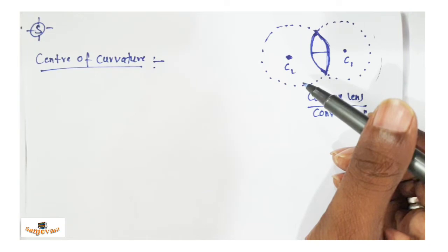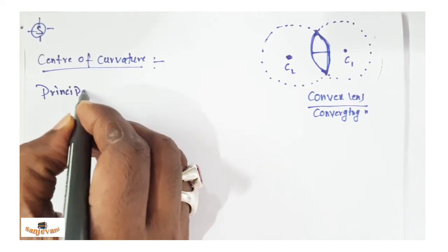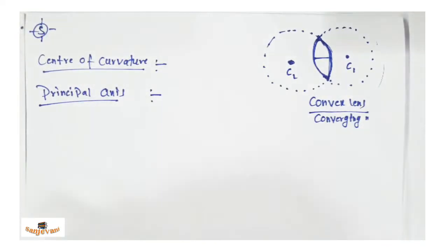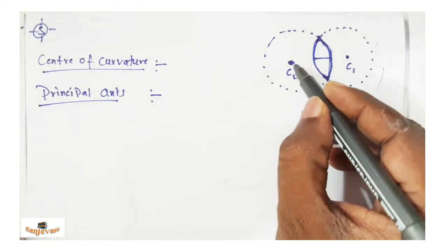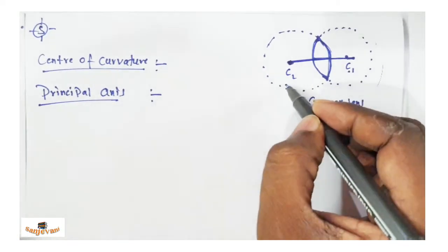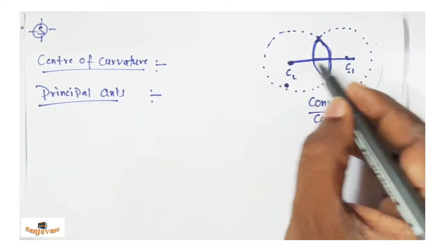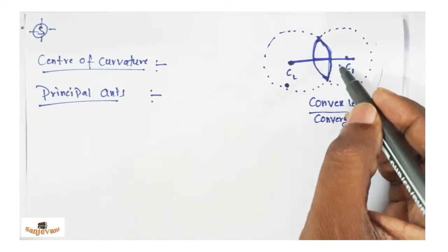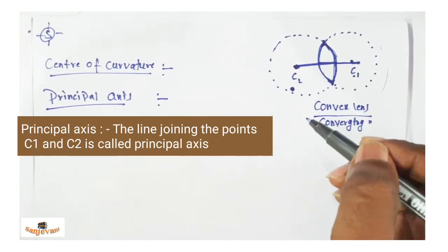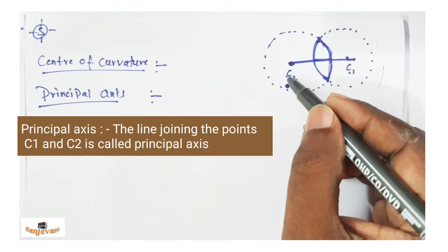What is principal axis? If we join the line between C1 and C2 — the two centers of curvature — we get an axis. This is called the principal axis. The line joining the points C1 and C2 is called the principal axis.